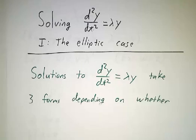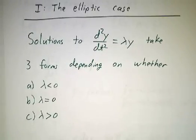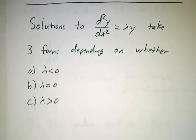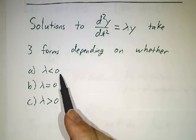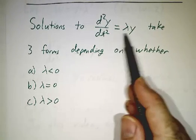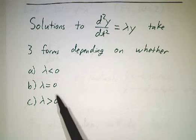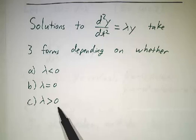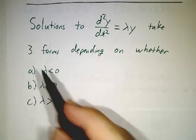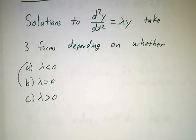There are actually three cases depending on the sign of the constant. You get one form when lambda is negative, when you get pushed back towards the center, one form where lambda equals zero, and one form where lambda is positive. In this video, we're going to do the first two. We're going to leave the last one to the next video.